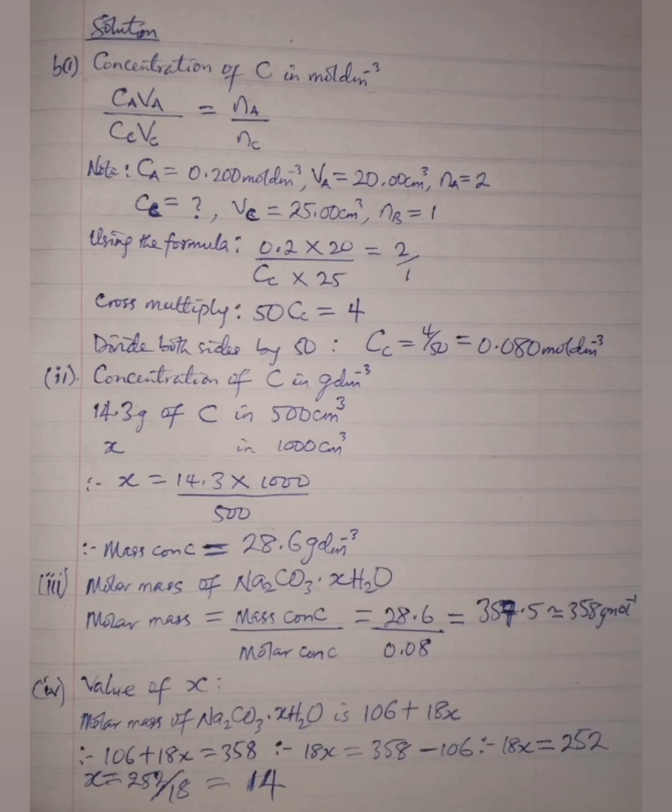One of the assumptions I made in this solution is that you already have your average titre value, right? So my own average titre value here and now to solve this question is 20 cm³, which is my VA, 20 cm³. So you can choose your own average titre value which is VA.